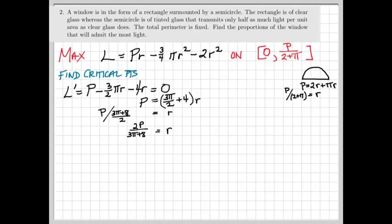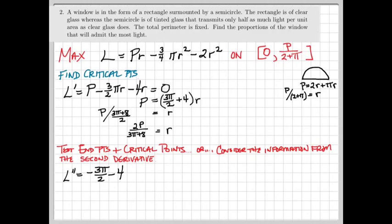At this point is normally where we test the endpoints and the critical points to make sure what we're looking at is a maximum. But instead, let's consider the information given to us by the second derivative. The second derivative, or the derivative of L' in this case, is straightforward. P is a constant, so it gives us zero.